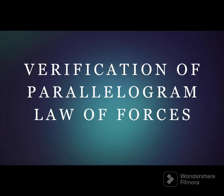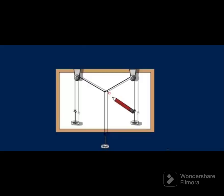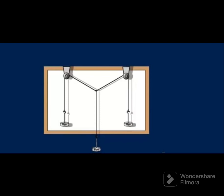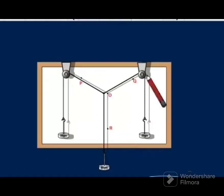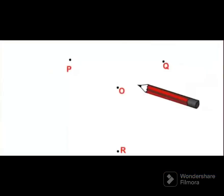Experimental verification of the Parallelogram Law of Forces: Two smooth pulleys are fixed at the top two corners of a vertically fixed drawing board. From the knot O, weights P, Q, and R are hung freely. Next, draw the directions and connect the points of the three strings when the point O is in equilibrium.